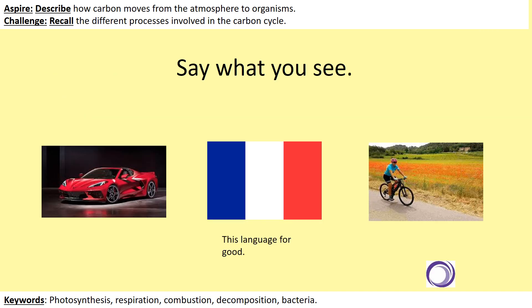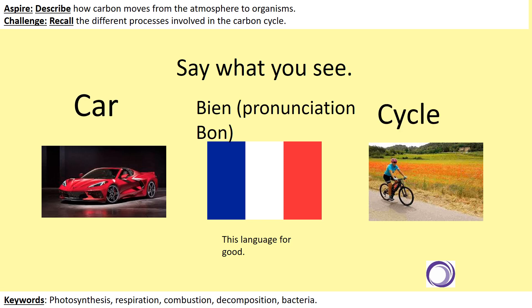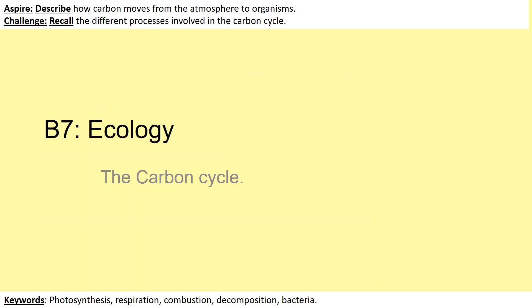So the lesson title — this is just a bit of a 'say what you see'. There are three pictures; say what you see and try to come up with the title for today's lesson. I'll give you 30 seconds. If you're struggling for that middle one, the French for 'good' is 'bon'. Alright, time's up — so this is the carbon cycle.